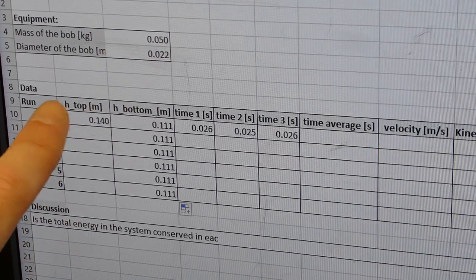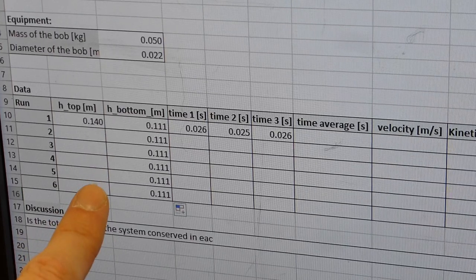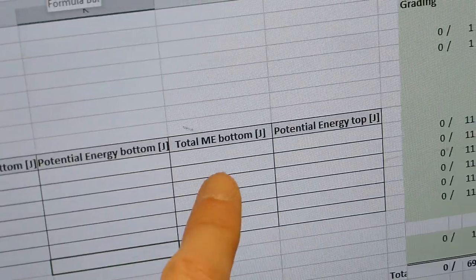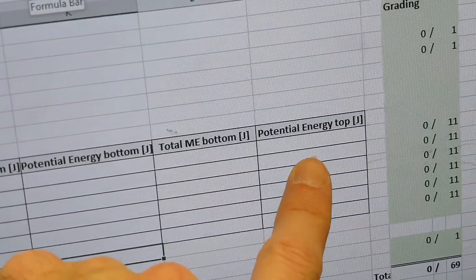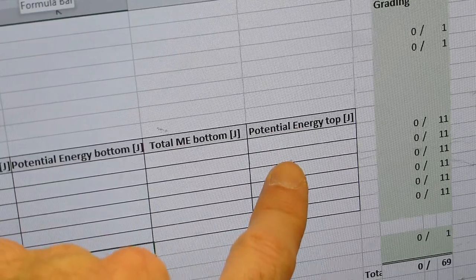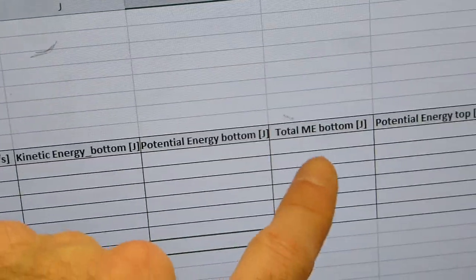Once you are done with that, you are repeating the whole thing for six different heights. So use different heights and redo the whole calculation and hopefully you will see a pattern if you are comparing the potential energy at the top, which as there is no kinetic energy is the mechanical energy at the top, and the total mechanical energy at the bottom.